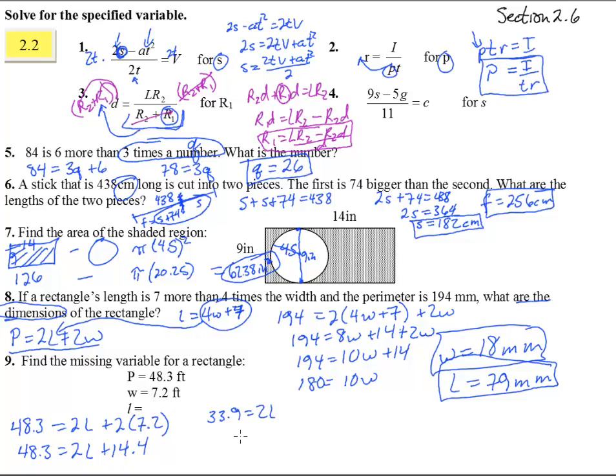Divide both sides by 2, and we get L equals 16.95. 16.95, and this is in feet. 16.95 feet is L. Okay, there we go.